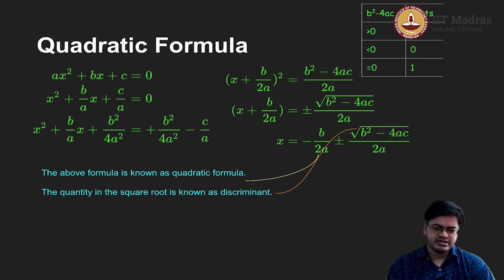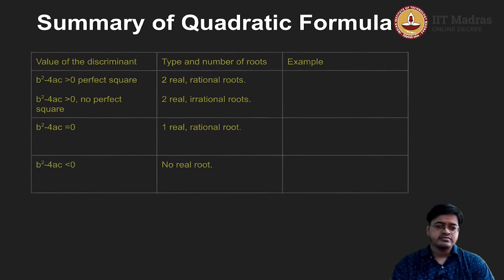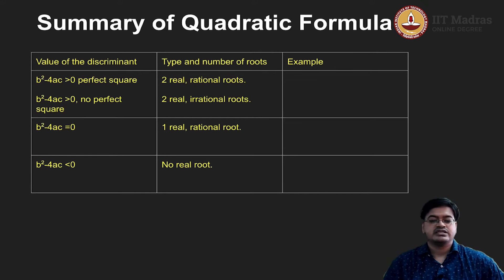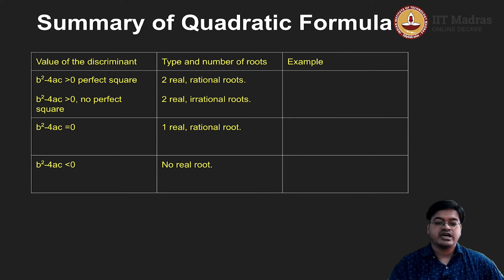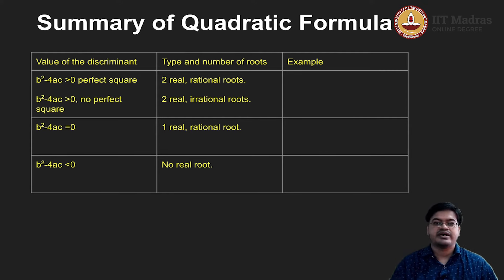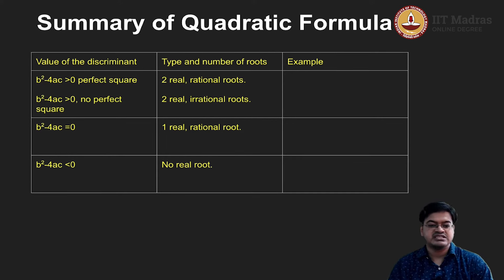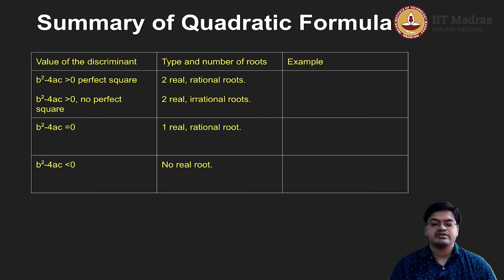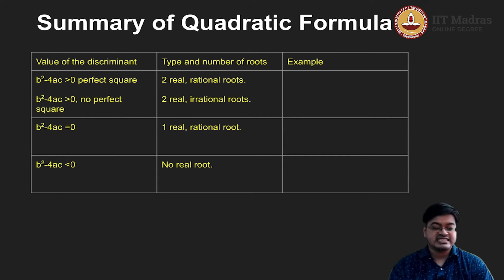Let us summarize using a table. If b squared minus 4ac is greater than 0 and it is a perfect square, we have two real rational roots. If b squared minus 4ac is greater than 0 but not a perfect square, we have two real irrational roots — the real number line is divided into rational and irrational numbers. If b squared minus 4ac equals 0, we get one real rational root. And if b squared minus 4ac is less than 0, there are no real roots.